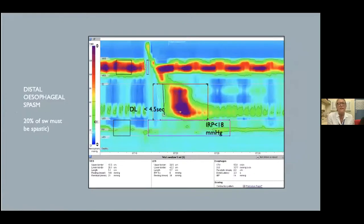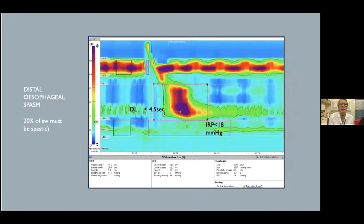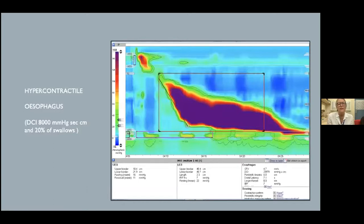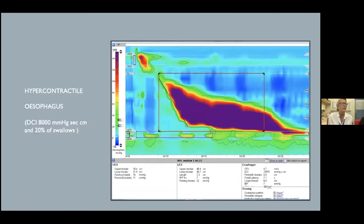Distal esophageal spasm is similar to spastic achalasia except the IRP is below 18 mmHg. You still have shortened distal latency time and the same straight-line pattern with normal-appearing peristalsis posteriorly. Hypercontractile esophagus — also dramatic — shows normal peristaltic contraction with IRP below 18 but a very strong contraction. If two or more of the 10 swallows are hypercontractile, it is called jackhammer esophagus. Always ask if the patient is using opioids, even codeine, as opioids can produce this exact picture — stopping them for two weeks restores normal contraction.